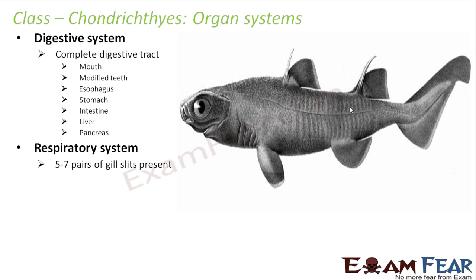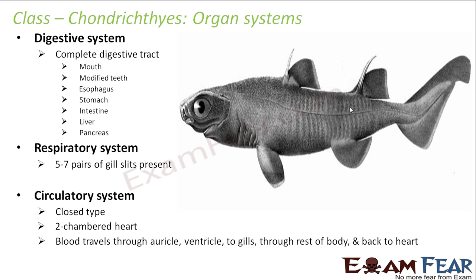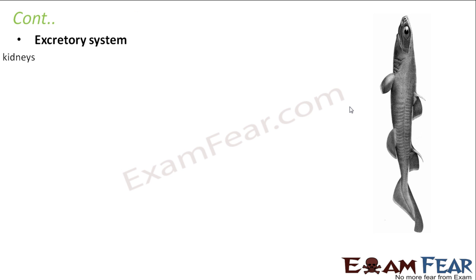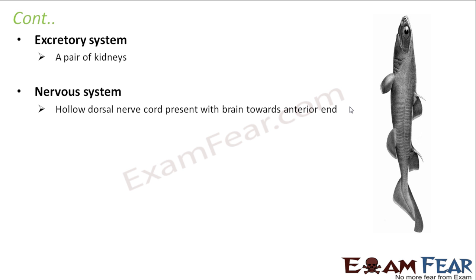Liver and pancreas are also present in the digestive tract. For the respiratory system, they have five to six pairs of gill slits. The circulatory system is closed type with a two-chambered heart — one auricle and one ventricle — with single circulation: blood travels from auricle to ventricle to gills to the rest of the body and back to the heart. The excretory system has a pair of kidneys. The nervous system has a hollow dorsal nerve cord with the brain at the anterior end, showing cephalization.